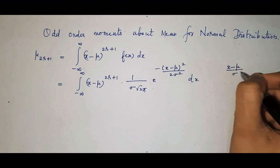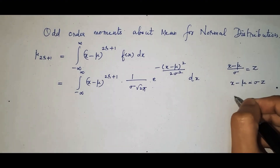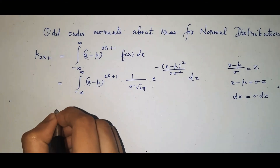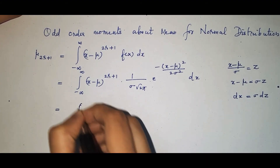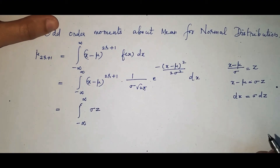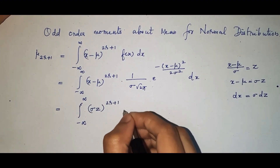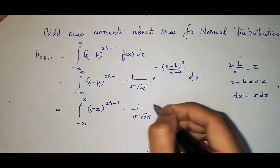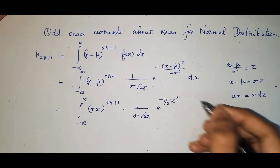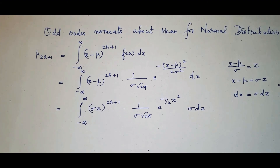Now I apply the substitution: let (x − μ)/σ = z, so x − μ = σz, and taking the derivative on both sides gives dx = σ dz. Substituting, the term (x − μ)^(2r+1) becomes (σz)^(2r+1), and the exponent (x−μ)²/σ² becomes z², with dx replaced by σ dz.